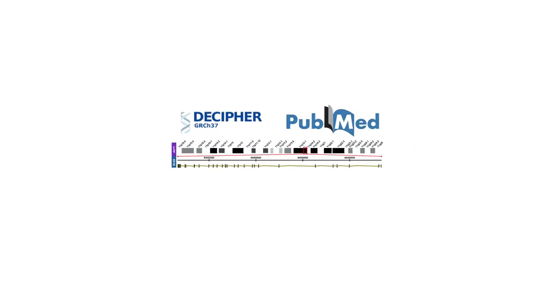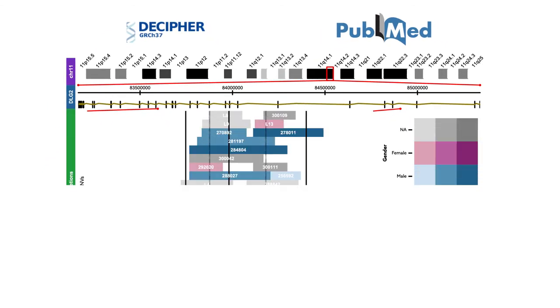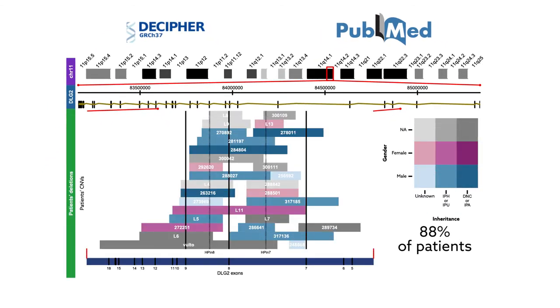When they consulted genetic databases for individuals bearing DLG2 deletions, they found that these exons were missing in 88% of patients with these conditions.